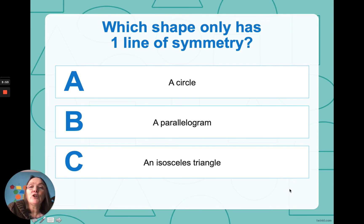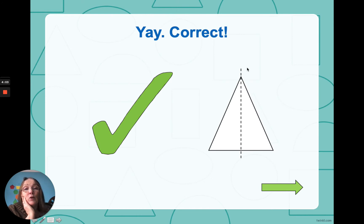Now, which shape has only one line of symmetry? Again, I'm not going to spend too much time, because I haven't really explained what an isosceles triangle is. And that's the answer. We'll have a quick look. That's an isosceles triangle. You can only make it equal on both sides if you divide it down the middle like that.